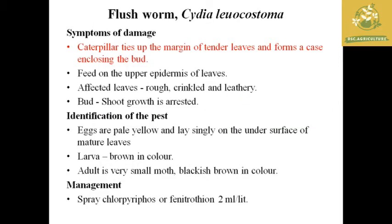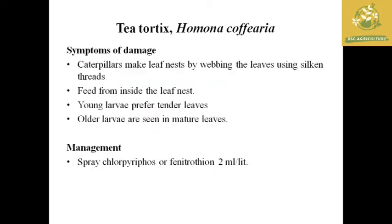The next pest is the flush worm, where the scientific name is Cydia leucostoma. The symptom of damage: the caterpillar ties up the margin of tender leaves and forms a case enclosed with the bud, where the larvae remain inside and grow into an adult. The eggs are pale yellow in color and laid singly on mature leaves. The larvae are brown in color and it is a very small moth with a blackish-brown color. Management: chlorpyrifos or fenvalerate at 2 ml per liter.